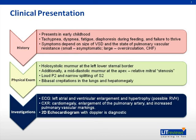Large VSDs may lead to changes on chest X-ray and ECG. With a large amount of shunting, ECG may reflect left atrial and ventricular enlargement and hypertrophy. If shunting is severe, right ventricular hypertrophy may also occur. Chest X-rays show cardiomegaly with enlargement of the pulmonary artery and increased pulmonary vascular markings. 2D echo with Doppler is diagnostic for VSD.